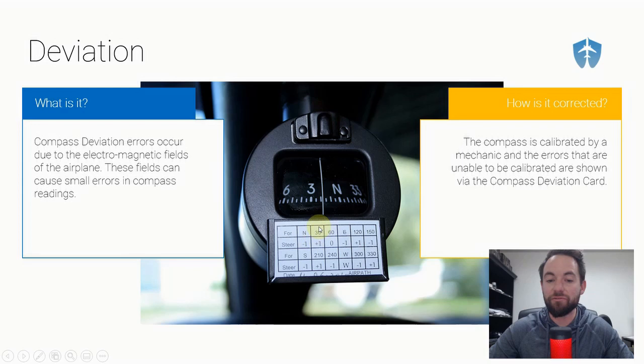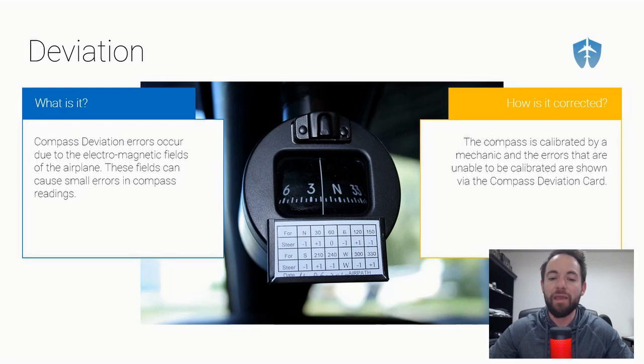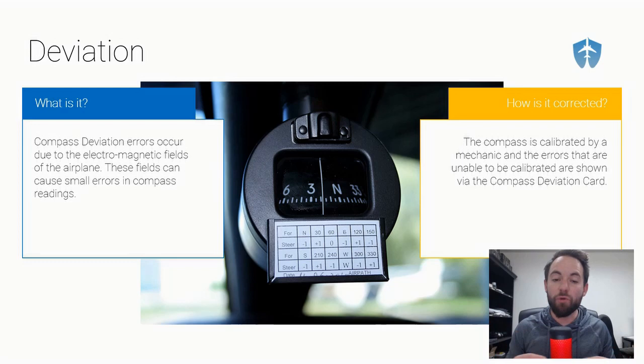Looking at the compass deviation card: if we want to fly north, we actually have to fly minus one degree — so 359 on the compass equates to 360. If we want to fly a heading of 030, we add one degree and fly 031 on the compass. These are typically small corrections — usually no more than six or seven degrees — but we need them to ensure we're flying the correct magnetic heading corrected for the aircraft's electromagnetic fields.